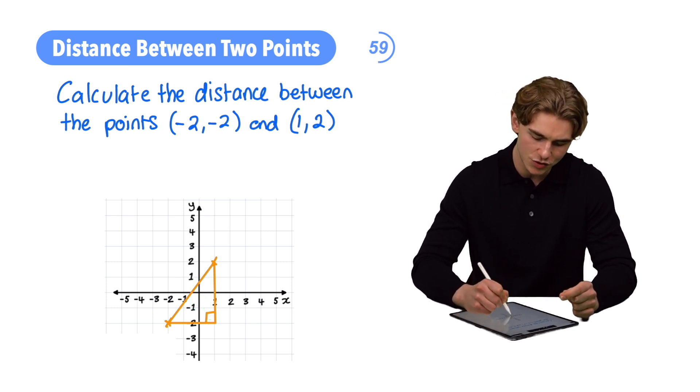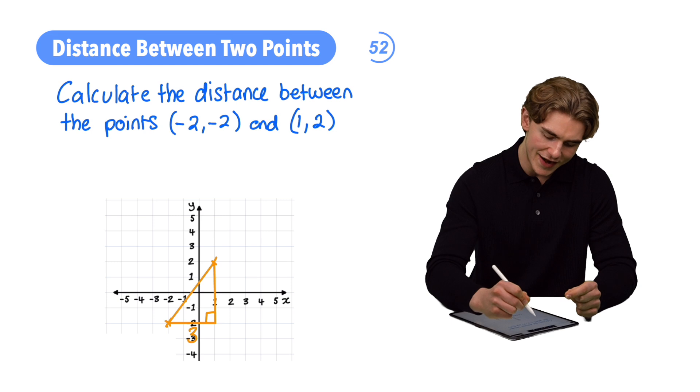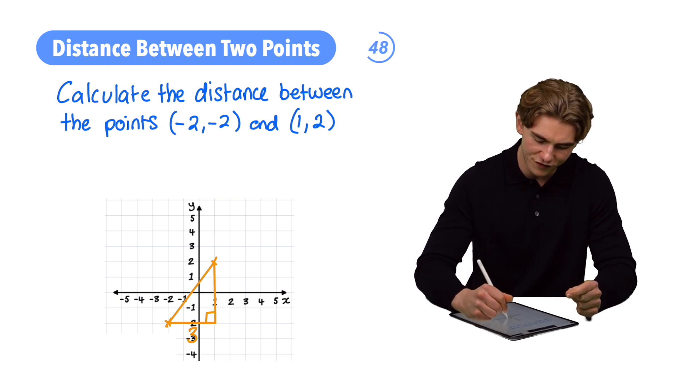In the x direction, we go from -2 to +1, which gives us a width of 3 along the bottom. In the y direction, we go from -2 up to +2, which gives us a height of 4.